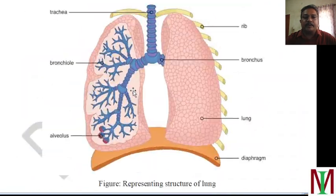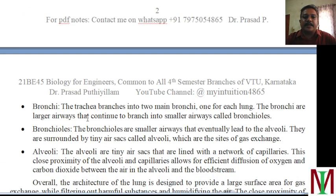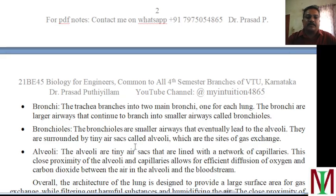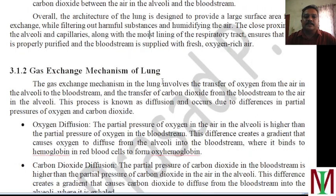Bronchia — the trachea branches into two main bronchia, one for each lung. The bronchia are larger airways that continue to branch into smaller airways called bronchioles. Bronchioles are further surrounded by small, tiny air sacs called alveoli, which are the sites for gas exchange — oxygen and carbon dioxide exchange takes place there. Alveoli are tiny air sacs lined with a network of capillaries where the exchange takes place. That is the overall architecture.